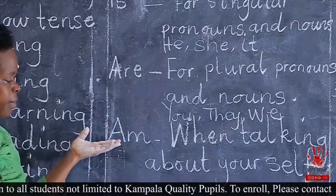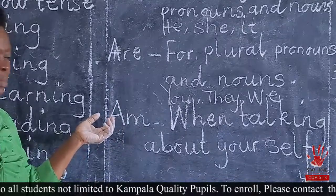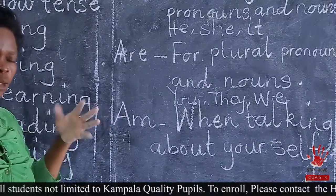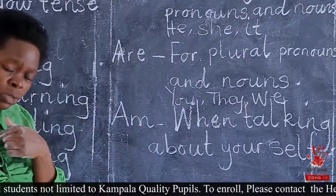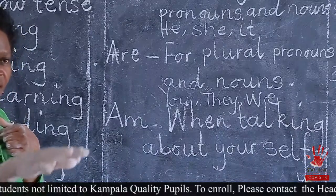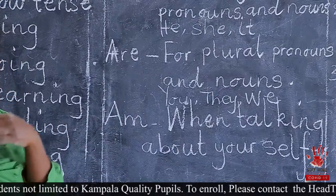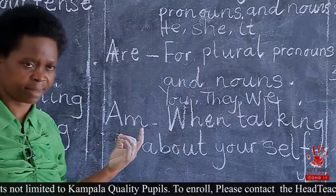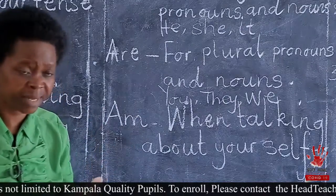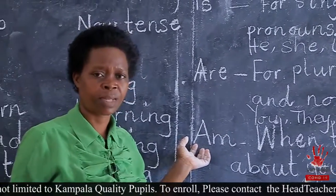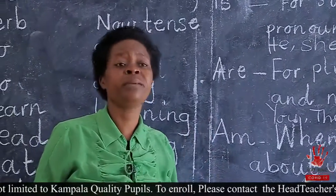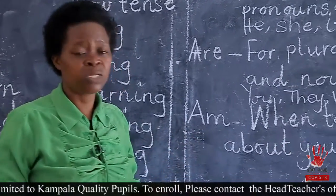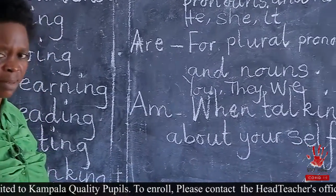Pronouns can be like you, they, we. So when you are using these ones: you are, they are, we are, those people are, those children are, those parents are — you're going to use a helping verb called are. Then I have am. You're talking about yourself. Like I can say, what are you doing now? I'm writing, I'm reading, I am doing this and that. So I am is when you're talking about your own self. These are helping verbs.